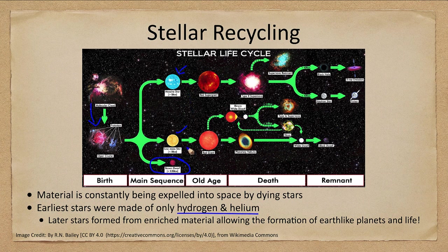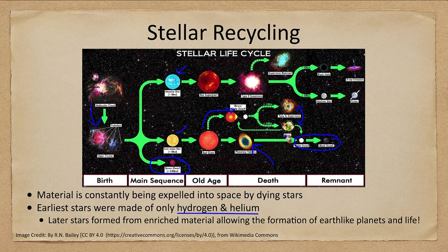A star like our sun can become a red giant and then a planetary nebula — one way we expel material back out into space. The rest remains trapped as a white dwarf and eventually a black dwarf. In a binary system you can get a nova or supernova depending on conditions. For more massive stars, they will become supergiants and then undergo a type 2 supernova, which expels a great deal of material out into space.